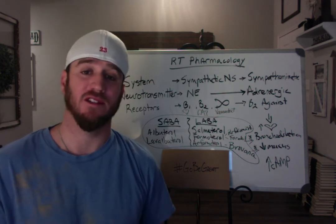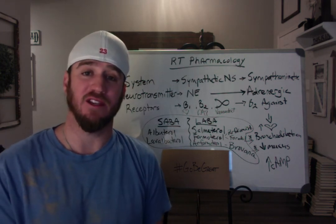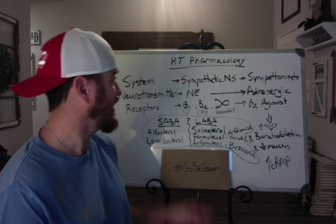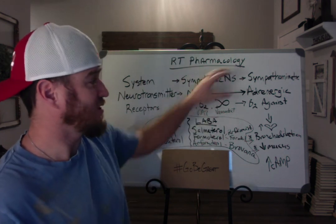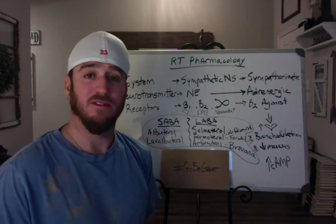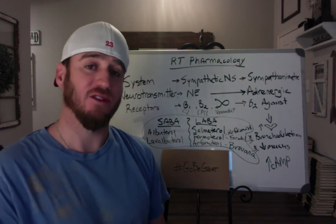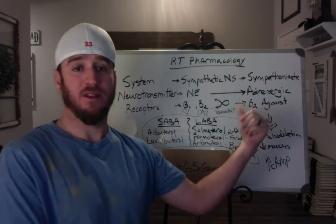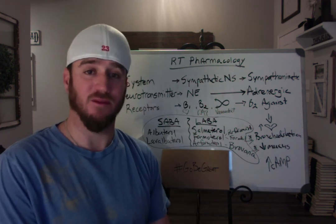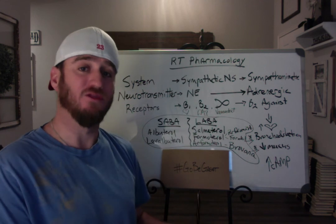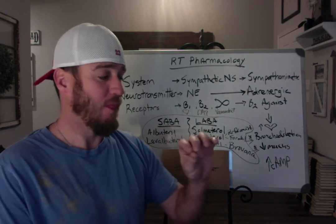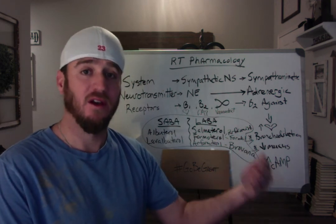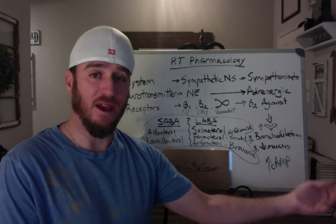When are we going to give these drugs? You always have to know your indications. What's the indication for sympathomimetics, adrenergics, beta-2 agonists, SABAs or LABAs? A common answer — and it's a misconception — is that the indication is a wheeze. The patient is wheezing, so you give them a sympathomimetic. That's not always correct. Your indication is smooth muscle relaxation in the presence of reversible airway obstruction.